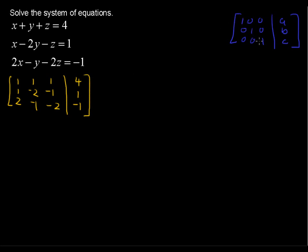We want to get this diagonal of 1's. With a system of 3 equations, it's easier to work on the 1's first and then get your 0's. I already have a 1 in the first position, so I'm good there. Now I want 0's in the first column. What multiple of the first row can I add to the second row to get a 0? Since 1 plus negative 1 equals 0, negative 1 times row 1 plus row 2 will replace row 2.